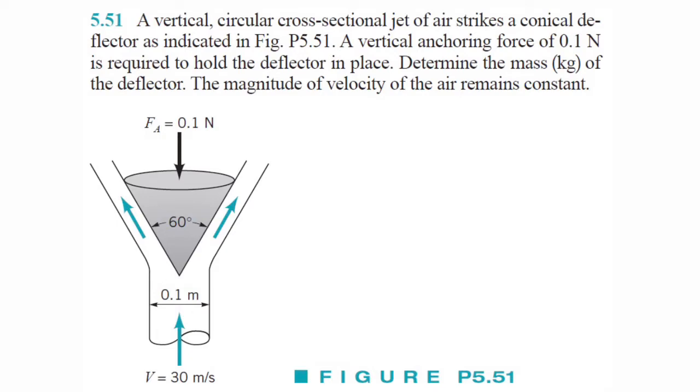But problem 5.51, this one reads: a vertical circular cross-sectional jet of air strikes a conical deflector. A vertical anchoring force of 0.1 Newtons is required to hold the deflector in place. Now we got to determine the mass of the deflector. The magnitude of velocity of the air remains constant. So let's go ahead and get started.